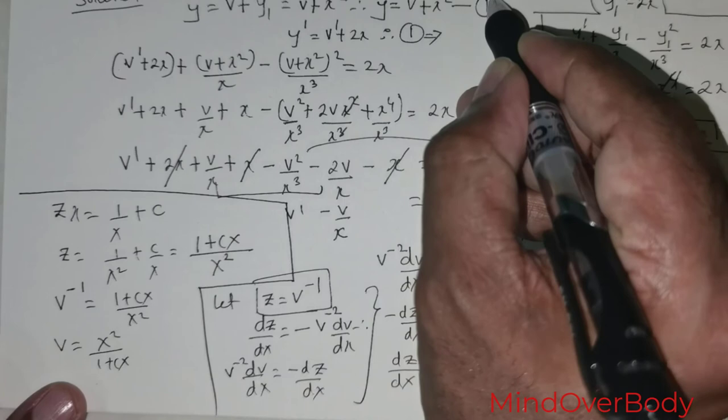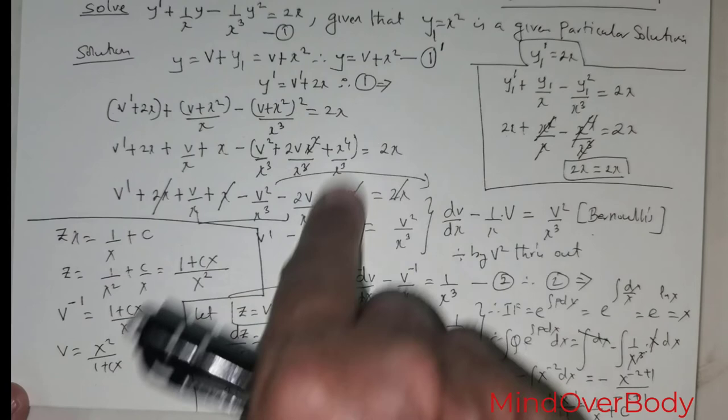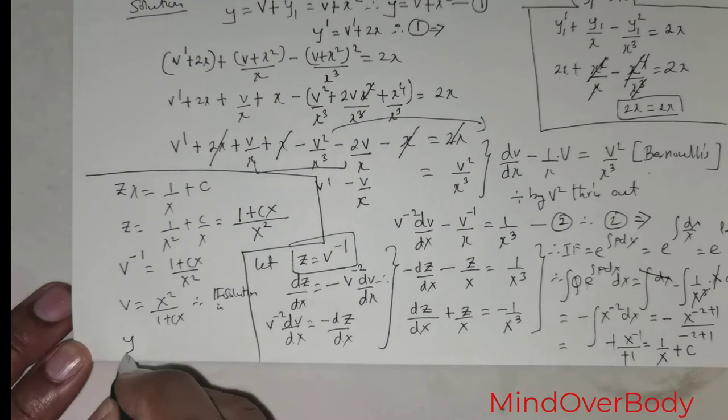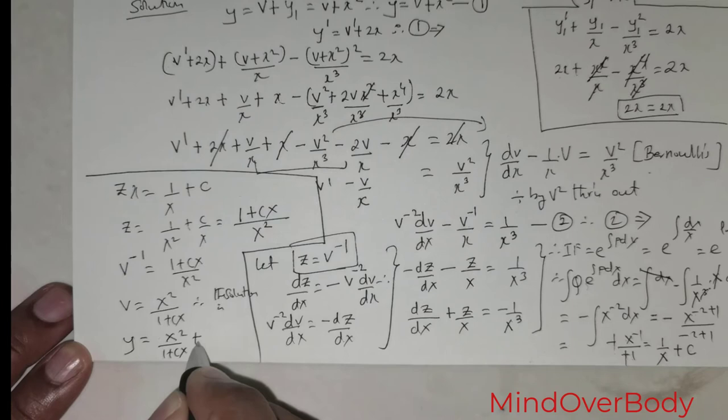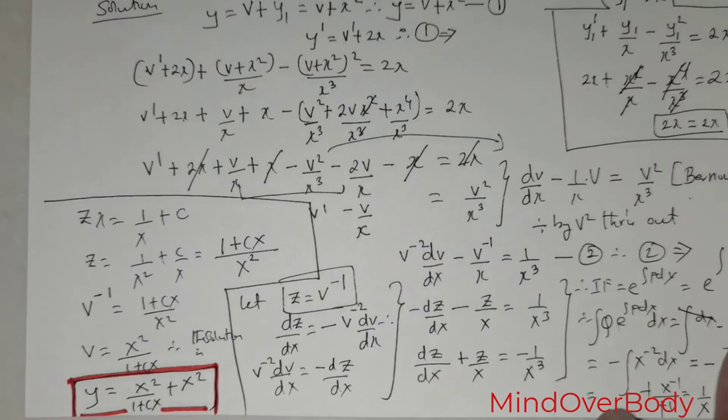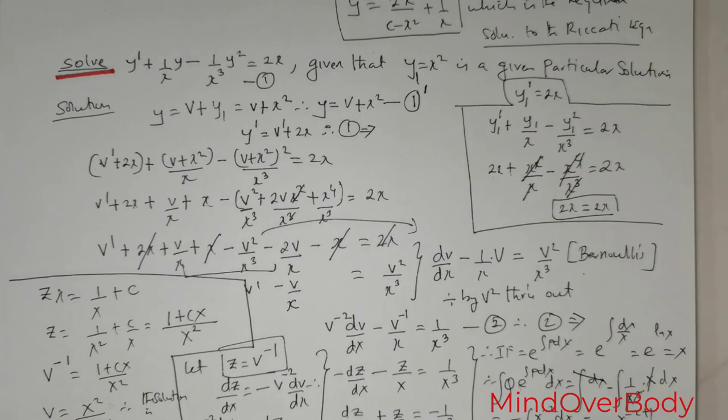Substituting v back into y = v + x², the solution is y = x²/(1 + cx) + x². This is the complete solution for this question.